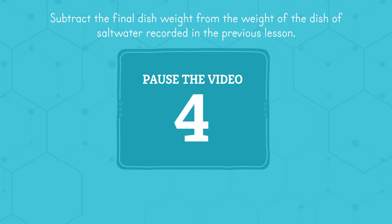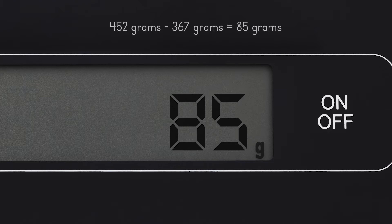That number is recorded on the previous page of your student journal. Pause the video and do that calculation now. My calculation is 85 grams. The weight of the dish yesterday was 452 grams. We can subtract today's weight of 367 grams to get 85 grams. Record that as the calculated missing water in your student journal.